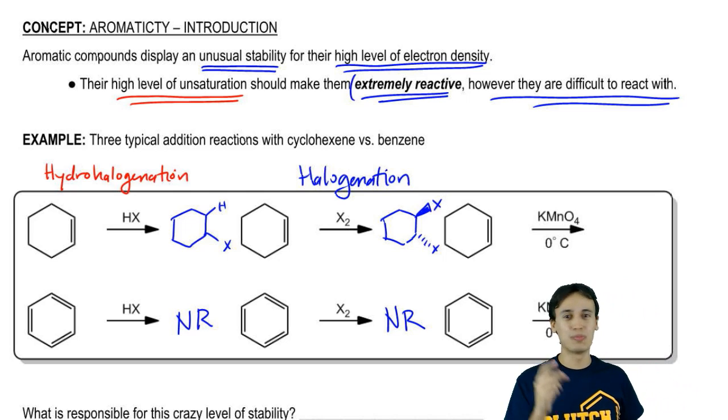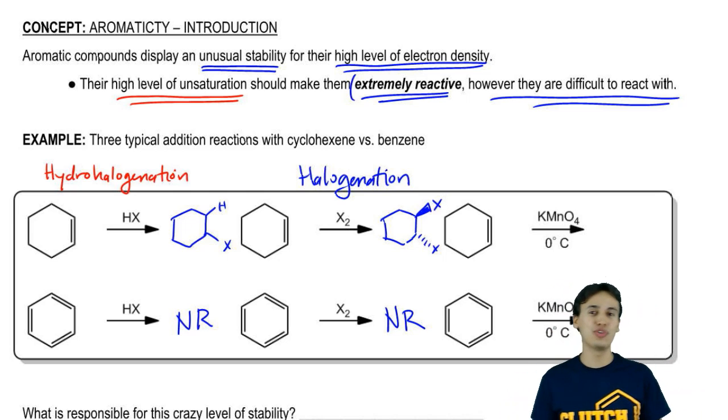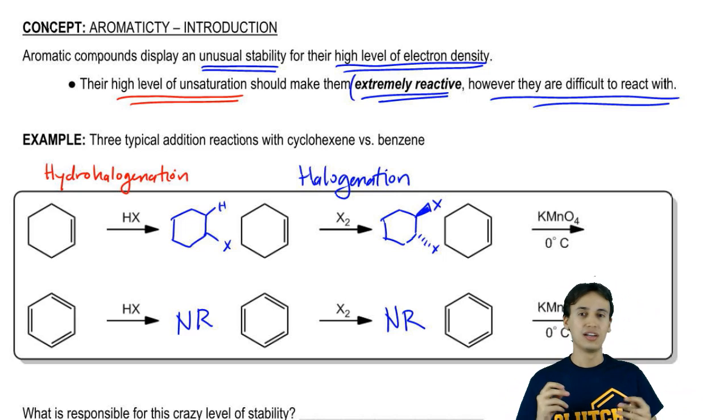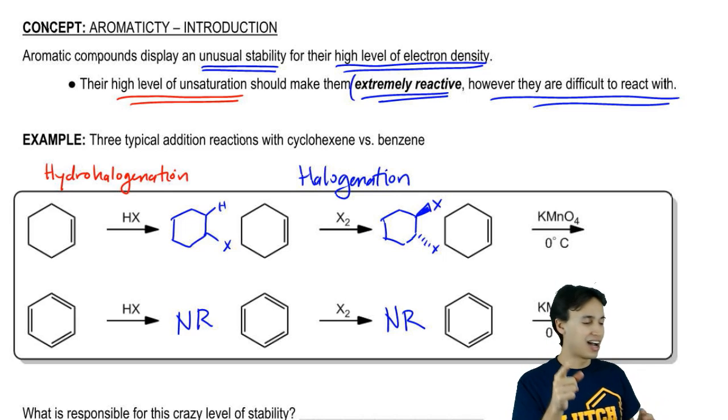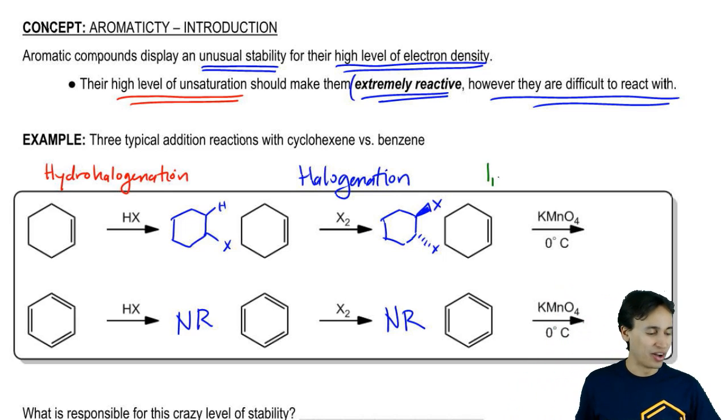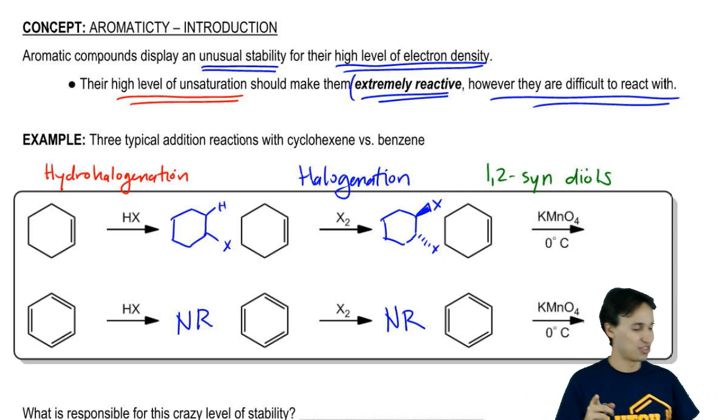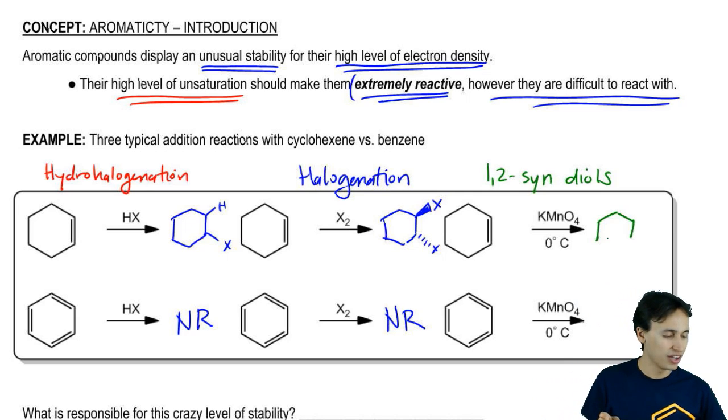This one is a bit more tricky. You might not remember it. What happens when you react KMnO4 at zero degrees temperature? This is a cold reaction of KMnO4. You got it. This would be a 1,2-syn diols reaction. I know you said it. I got you. 1,2-syn diols. You would wind up getting hydroxyl groups that are syn to each other.